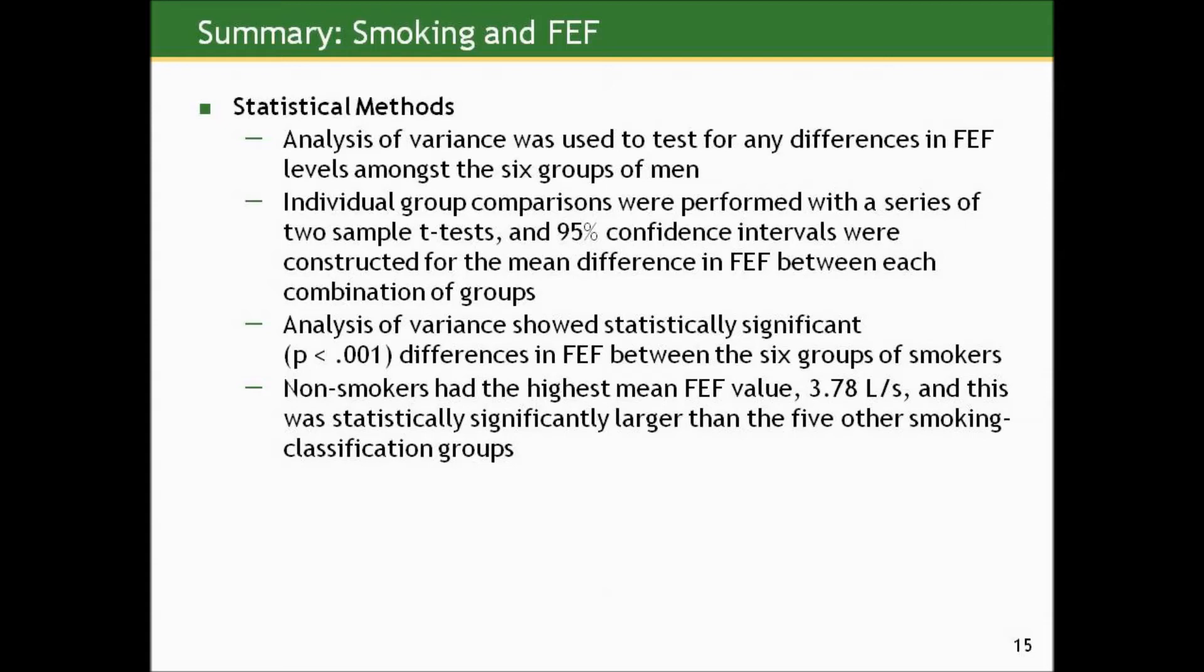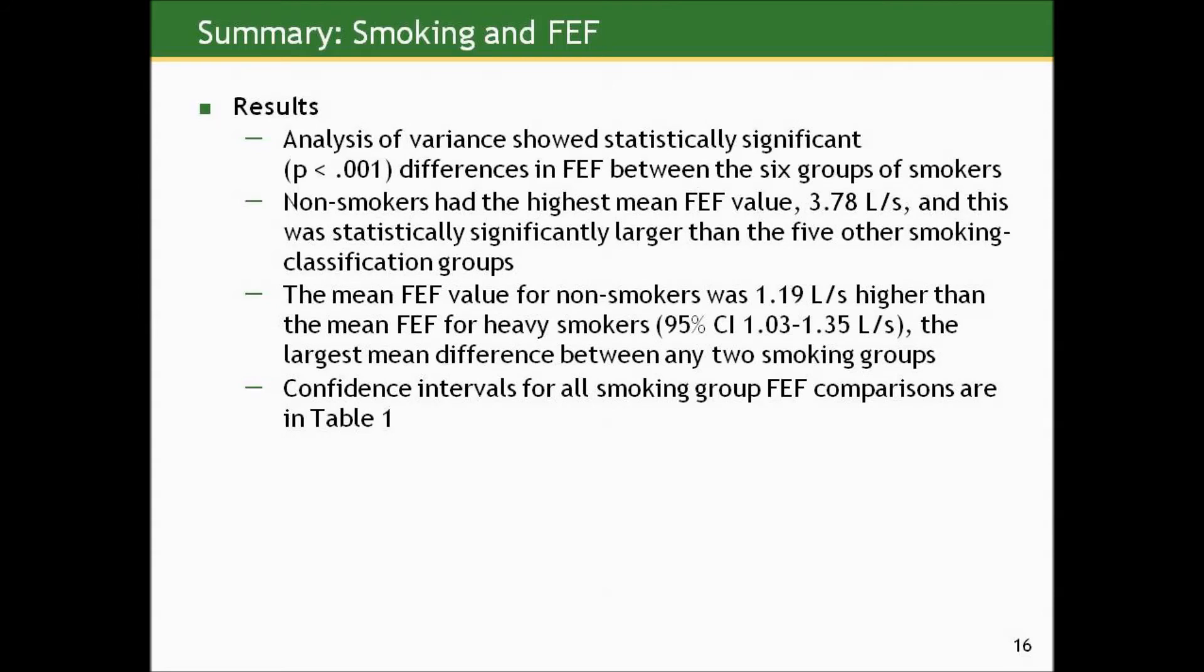Analysis of variance showed statistically significant differences in FEF between the six groups of smokers. That sentence alone is not a lot of information. It just shows that we can rule out random sampling error as the reason that we saw differences in sample means. So here's where we get into the real information component. Non-smokers had the highest mean FEF value, 3.78 liters per second, and this was statistically significantly larger than the five other smoking classification groups. So here I report the results of five t-tests all at once by saying that this mean alone was different than the other five groups.